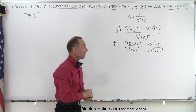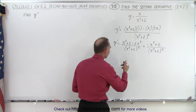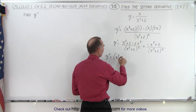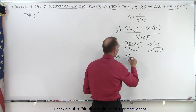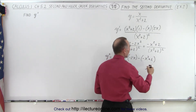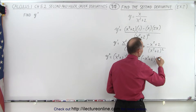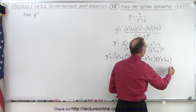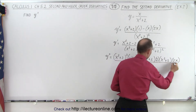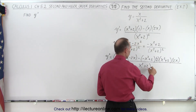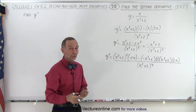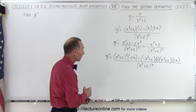Unfortunately we cannot simplify that. So next we find the second derivative. Again we have a quotient, so we use the quotient rule. Y double prime equals the denominator (x squared plus 2) squared, times the derivative of the numerator which is negative 2x, minus the numerator (negative x squared plus 2) times the derivative of the denominator — which is 2 times (x squared plus 2) times 2x — all divided by (x squared plus 2) to the fourth power. You can see it gets messy very quickly using the quotient rule twice.